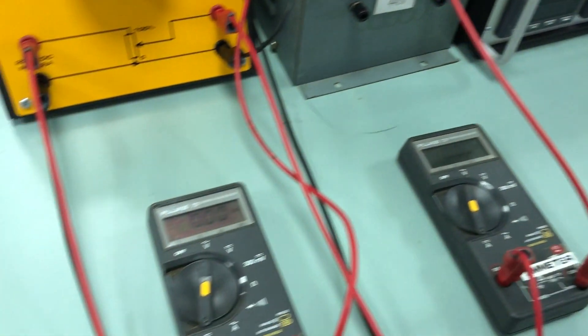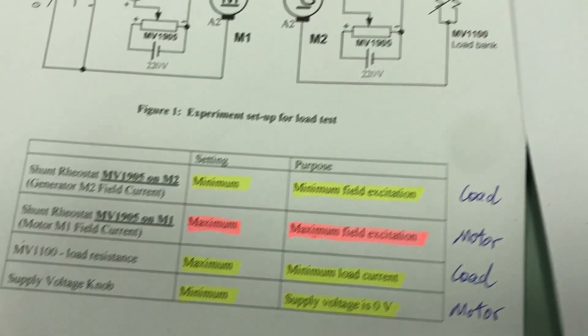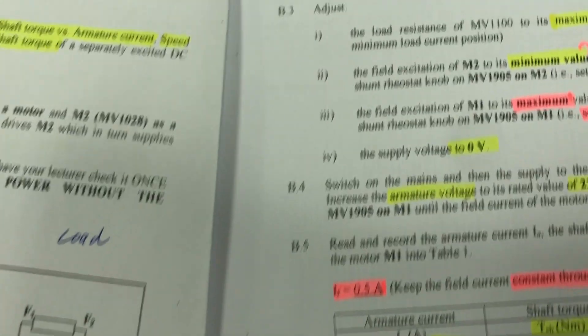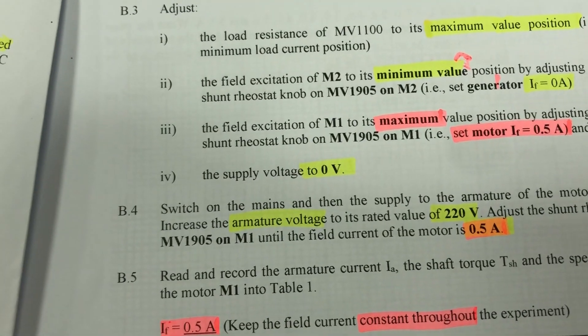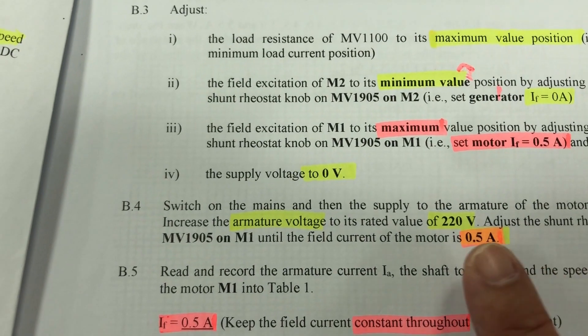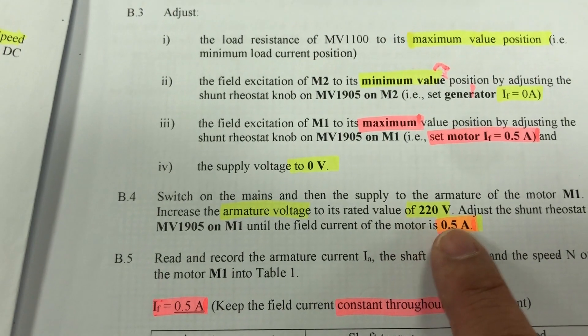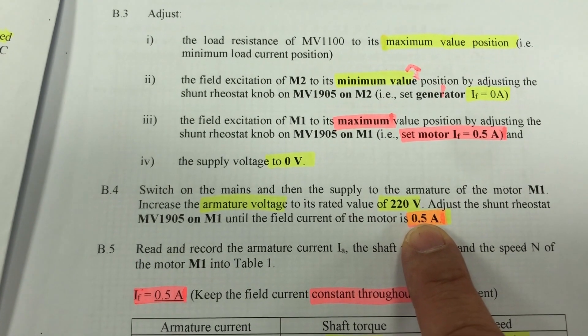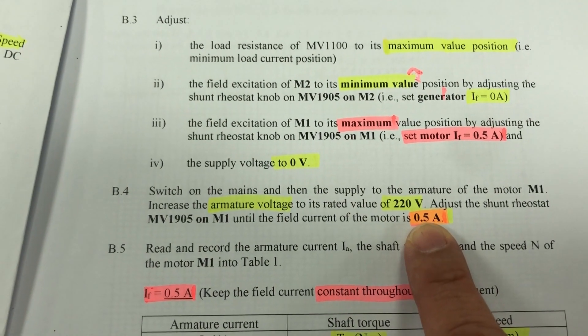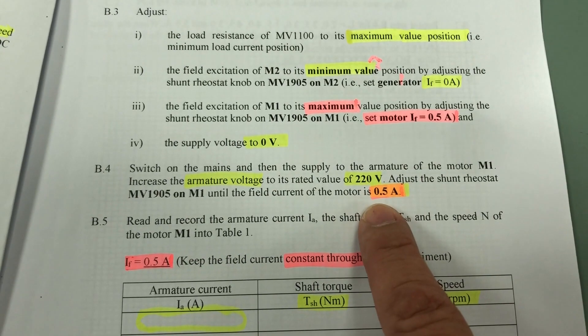We will start the experiment soon. Let me just zoom in. We will set the armature voltage at 220. Then we will fix the field current at 0.5 rather than 0.55.